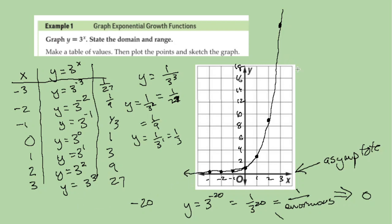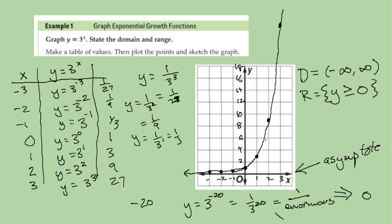When we do our domain and range: your domain is all real numbers — you can put any x values in, from negative infinity to positive infinity. And then your range is basically y greater than or equal to 0, since the asymptote is at 0. These are nice and pretty straightforward for figuring out domain and range.